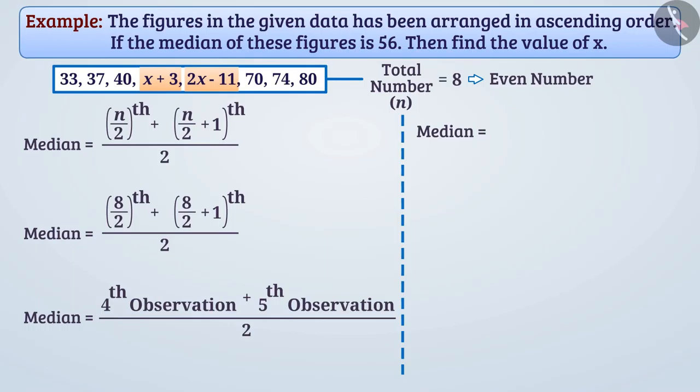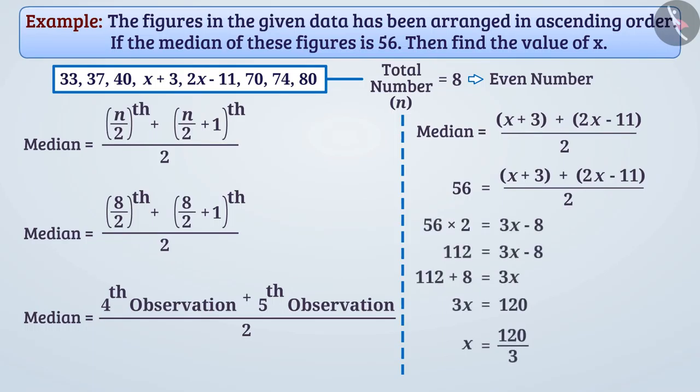Therefore, median equals (x+3 + 2x-11) divided by 2. From the question, it is known that median is 56. Therefore, we can write and simplify this equation to get a value of x as 40.